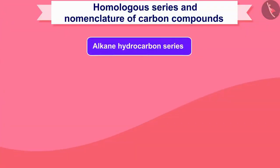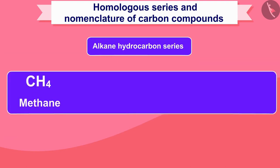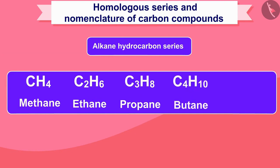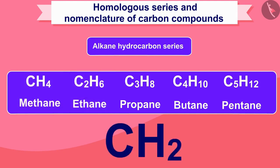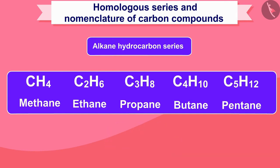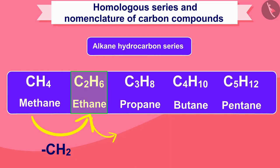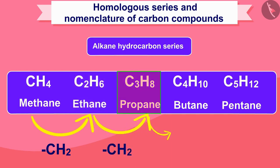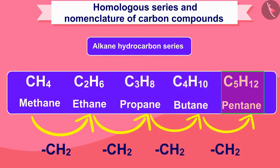The alkane hydrocarbon series are as follows: methane, ethane, propane, butane, pentane etc. In moving from one unit to another unit, there is a difference of CH2 unit. For example, there is a difference of CH2 unit from methane to ethane, ethane to propane, propane to butane, butane to pentane.